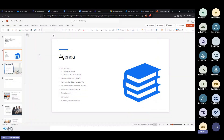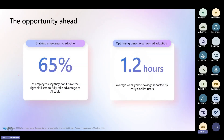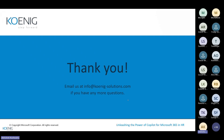According to a study, 65% of employees say they don't have the right skill set to fully take advantage of AI tools. Early Copilot users report an average weekly time saving of 1.2 hours. That's all about the webinar for today. The chat is open and we still have about 10 minutes - please put your questions and I'll be answering them. Thank you so much for joining the session; I hope you've learned something new.